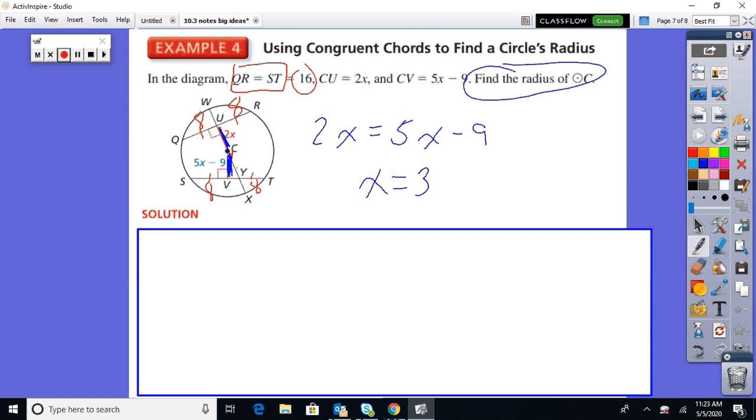So then I can plug it back in. And I know that CU and CV have to equal 6 when I plug it back in. So I'm plugging it in to there and to there. And you get 6. Okay, so that's going to help.